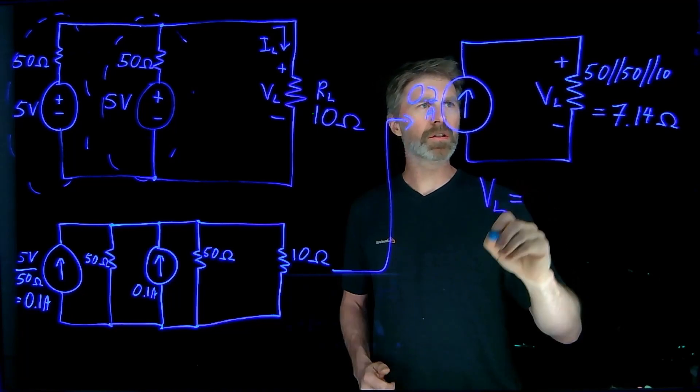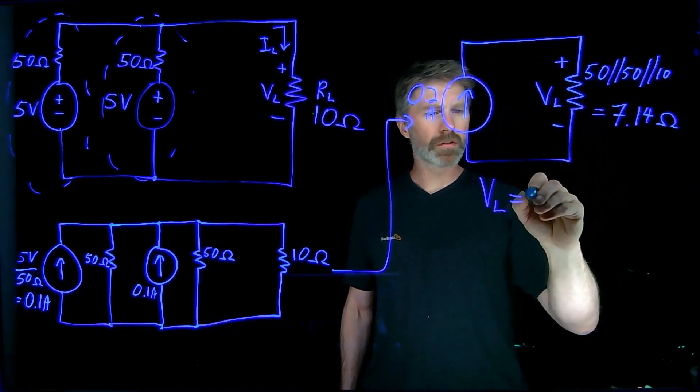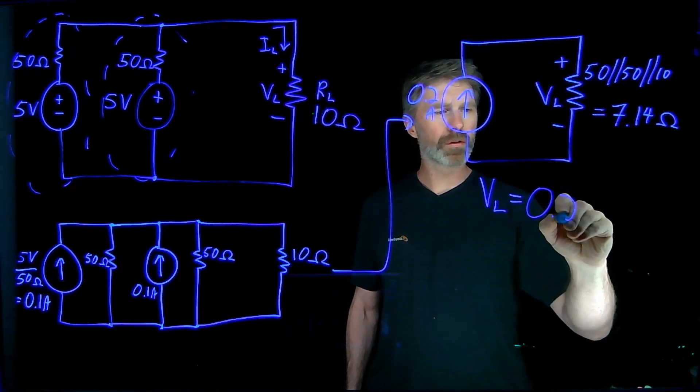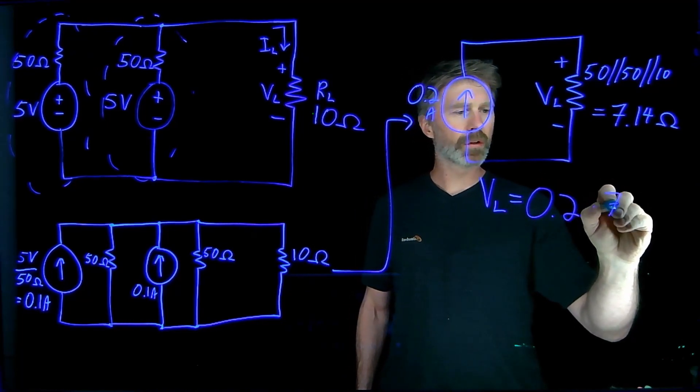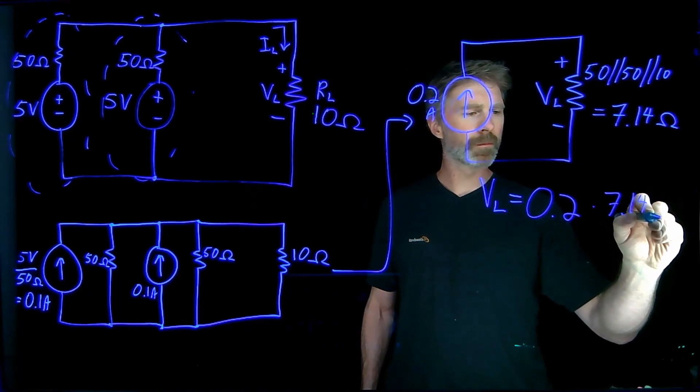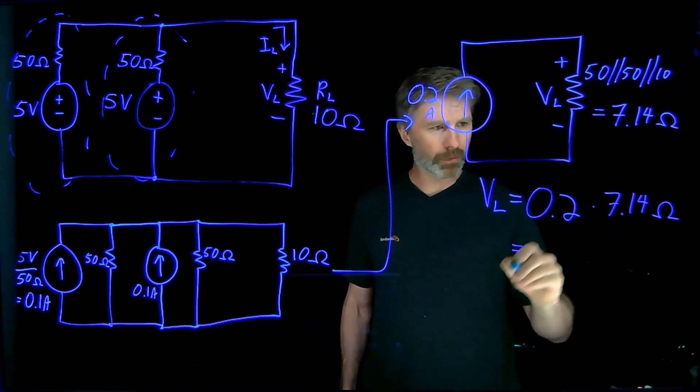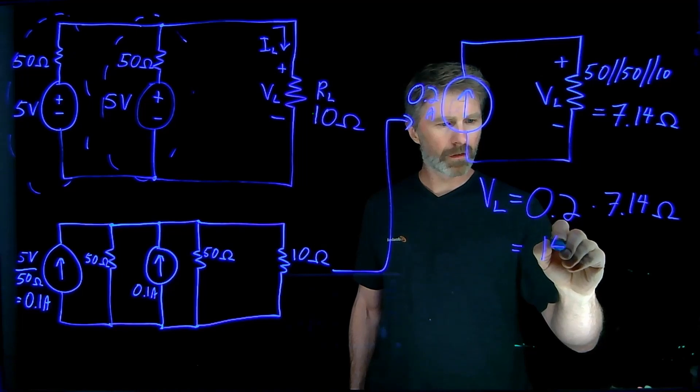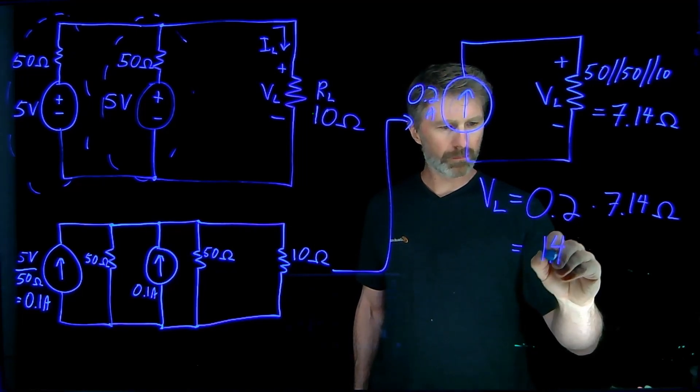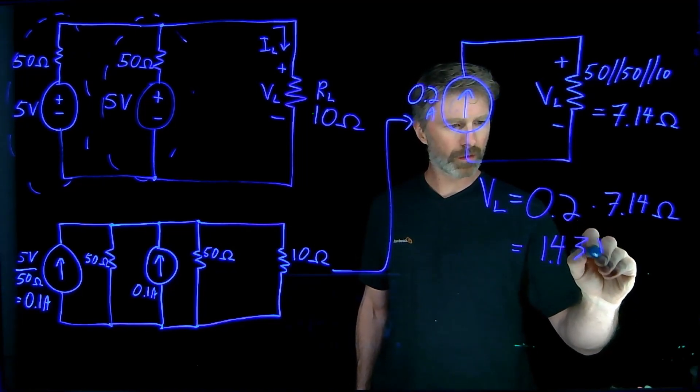And we can figure out pretty easily what the load voltage is. If you have 0.2 amps from the source going through this equivalent 7.14 ohm resistor, multiply those two numbers out and we come up with 1.43 volts.